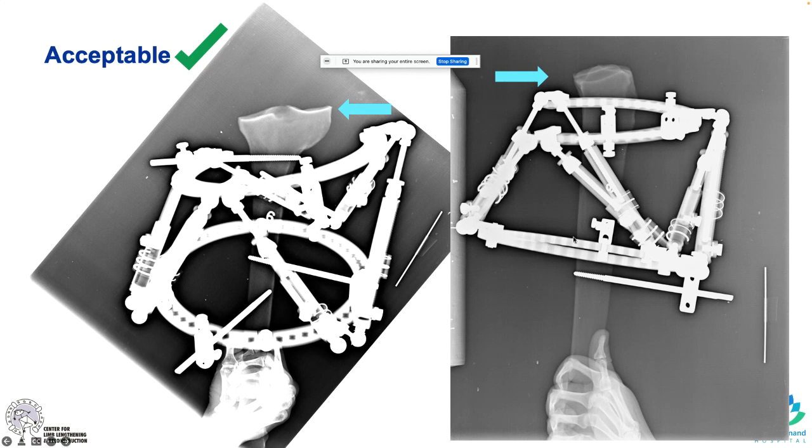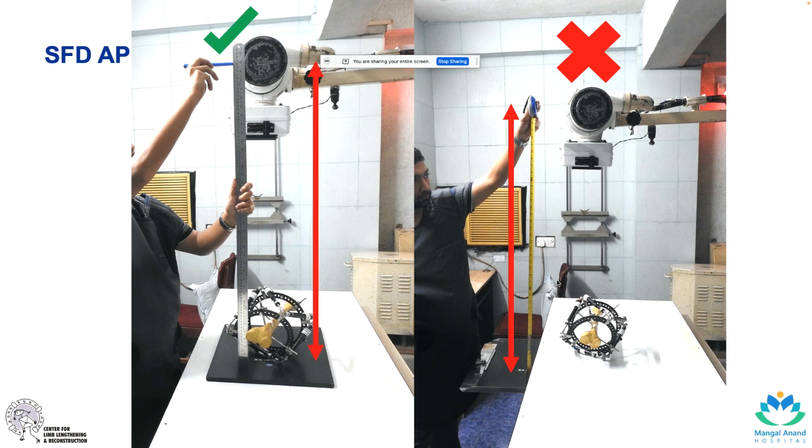These are good X-rays of the same model. Joint line is well seen with the blue arrows. You can see that both AP and lateral, all the struts are visible. The scaling object has been placed clearly and is not being cut, and these X-rays are okay to proceed with the software. So how do we measure the source film distance?